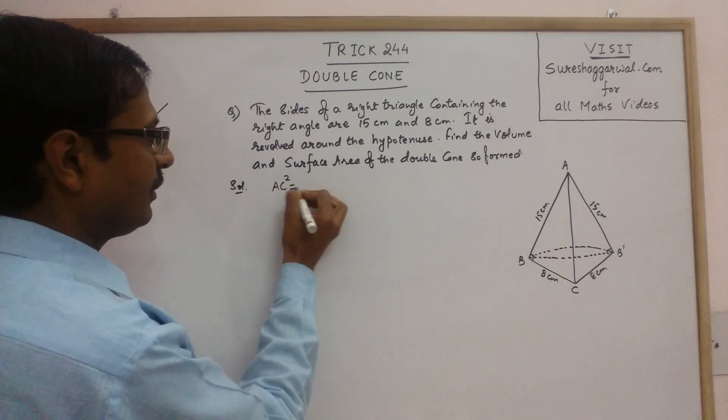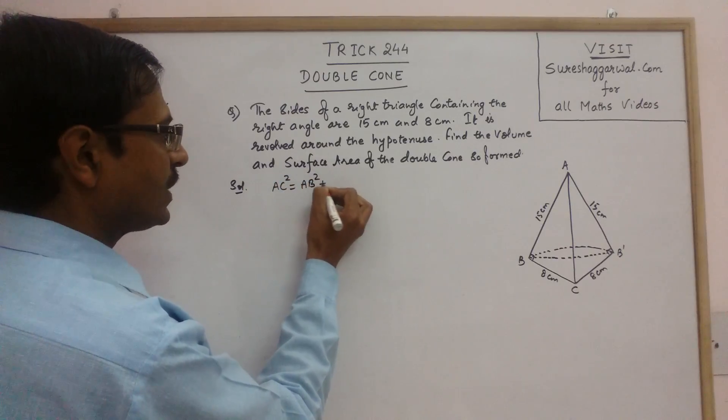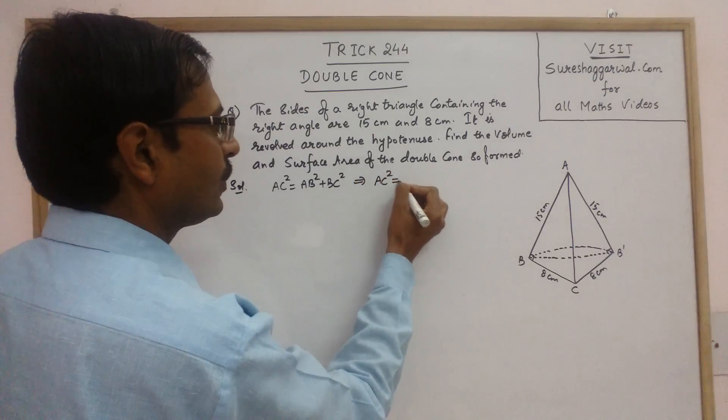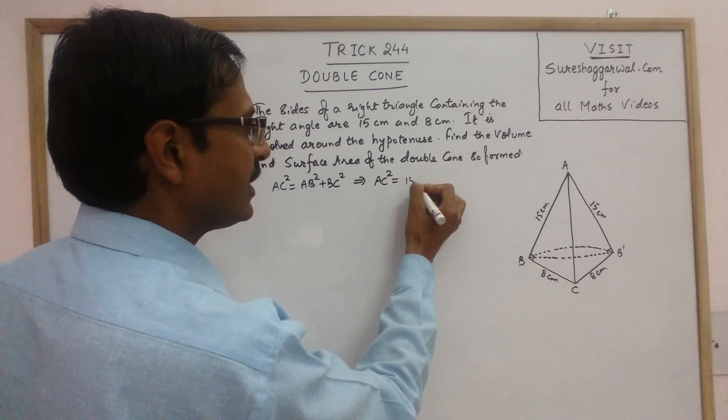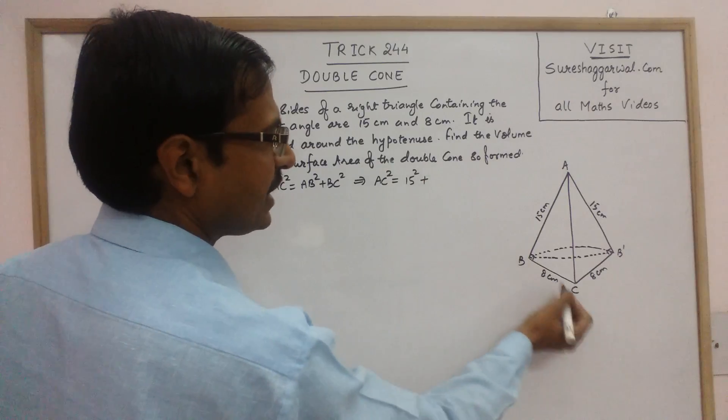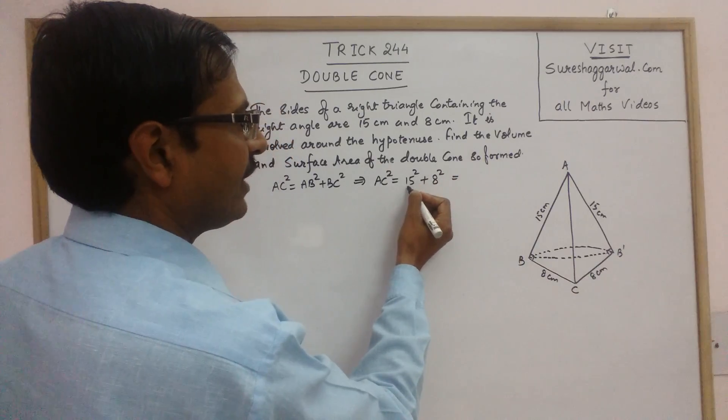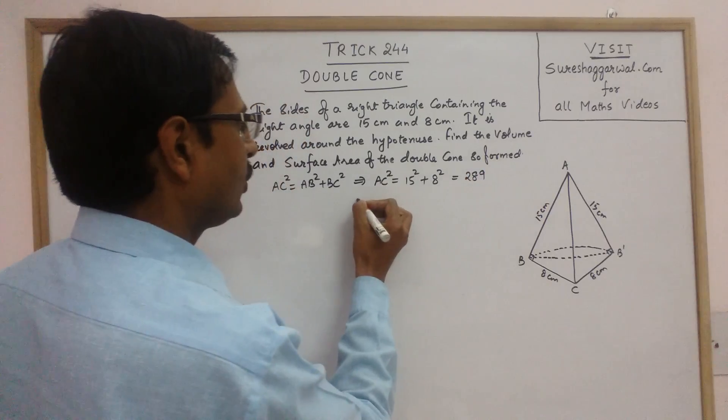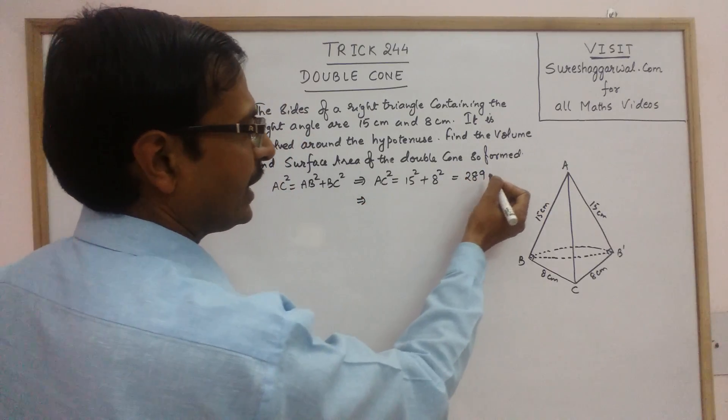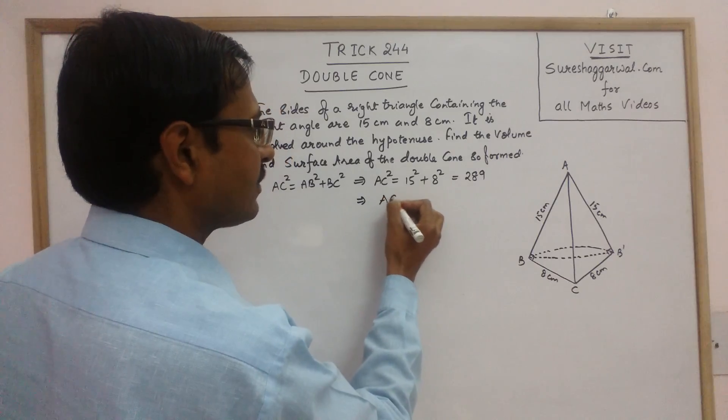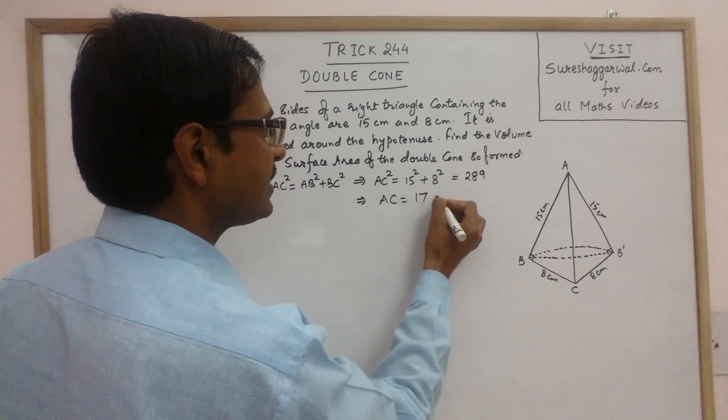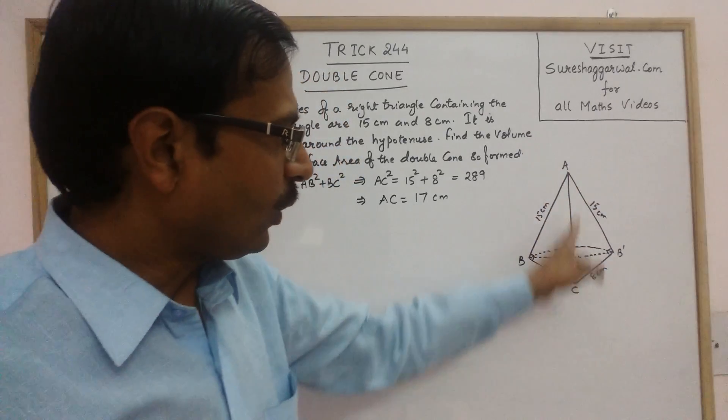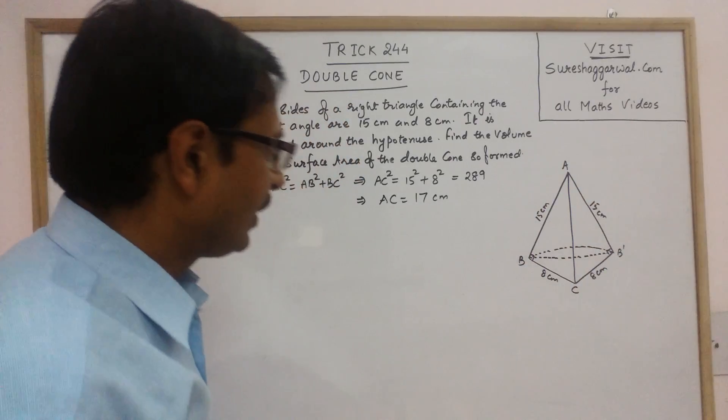Now, what we do is, first of all, we will find AC using Pythagorean theorem. So, AC square will be equal to AB square plus BC square. So, that gives AC square equal to AB is 15, so 15 square and BC is 8, so 8 square which is 225 plus 64, 289 and we all know that 289 is 17 square. So, AC comes out to be 17 centimeters. So, this is the first step. We have obtained the value of AC.